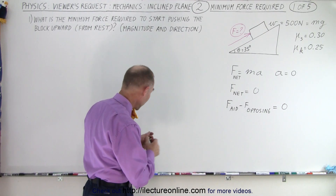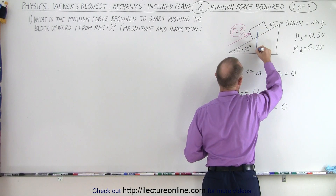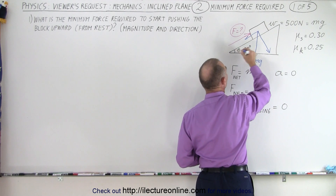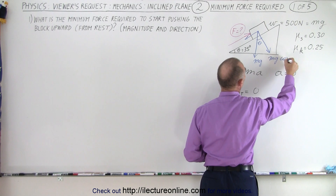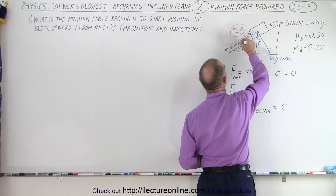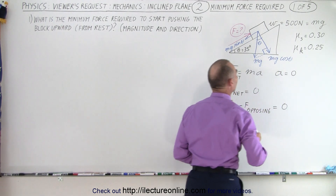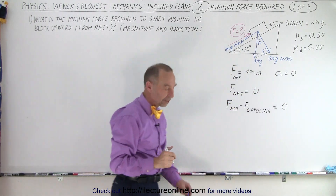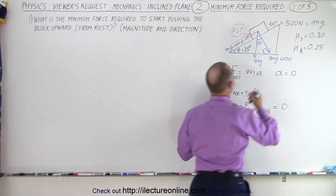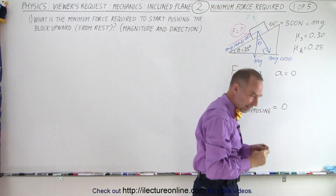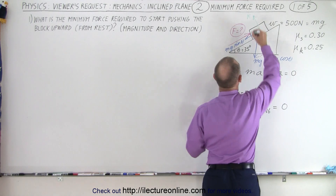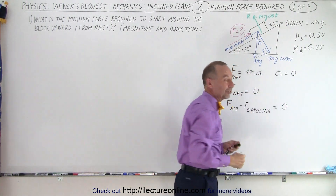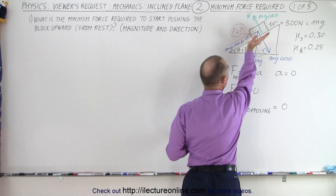Let's draw the forces. We have the weight of the block downward, Mg, which gives us a perpendicular component and a parallel component along the incline. If this angle is theta, then the parallel component is Mg sine theta and the perpendicular component is Mg cosine theta — forming a right triangle with Mg as the hypotenuse. That means we also have a normal force pushing back equal to Mg cosine theta.